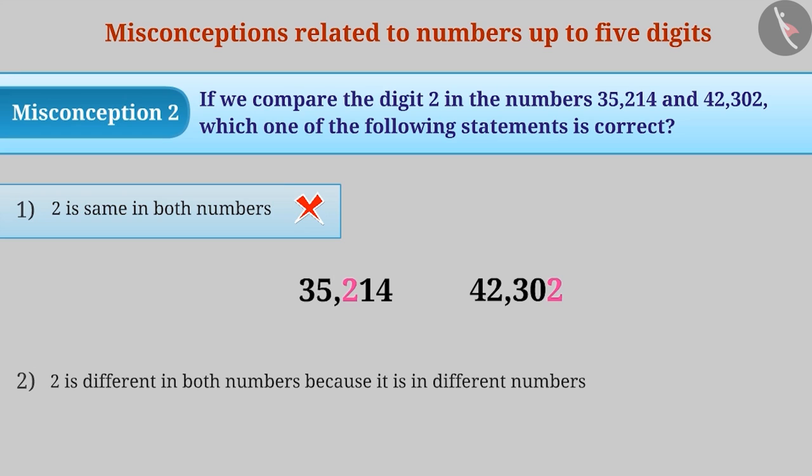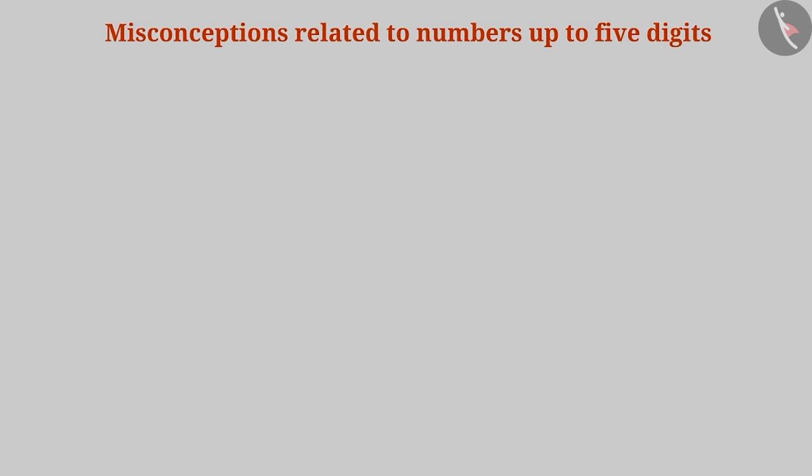Sometimes, it is known that the digit 2 is different in both numbers and the reason behind it is not known. The correct understanding is that the digit 2 has different place value in these two numbers. So, the digit 2 is different in both numbers.